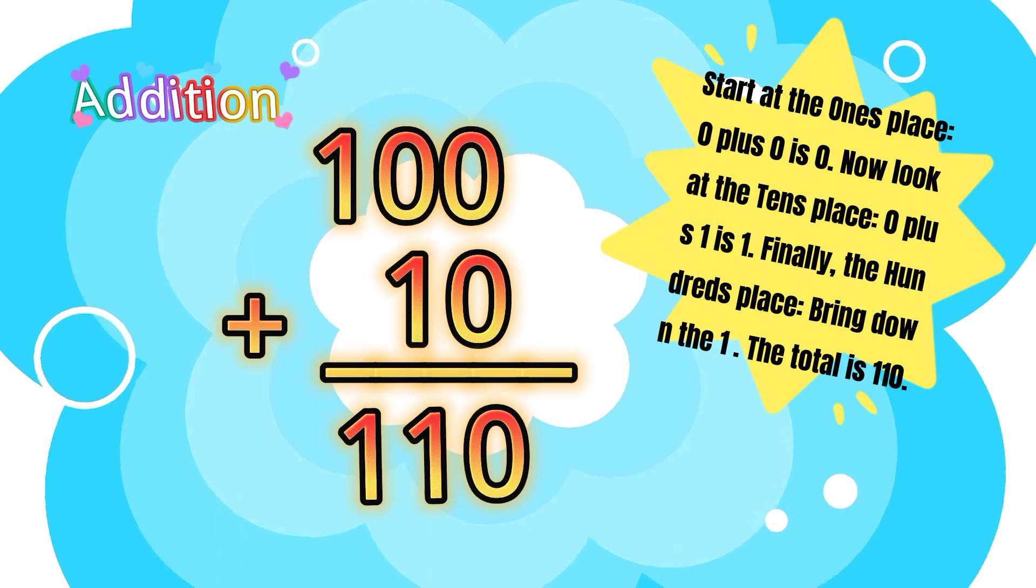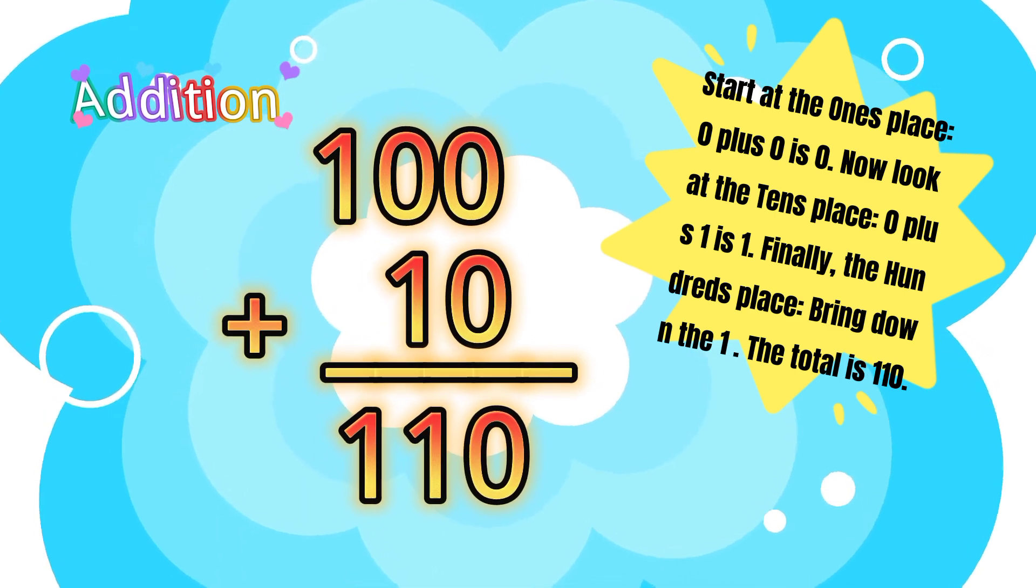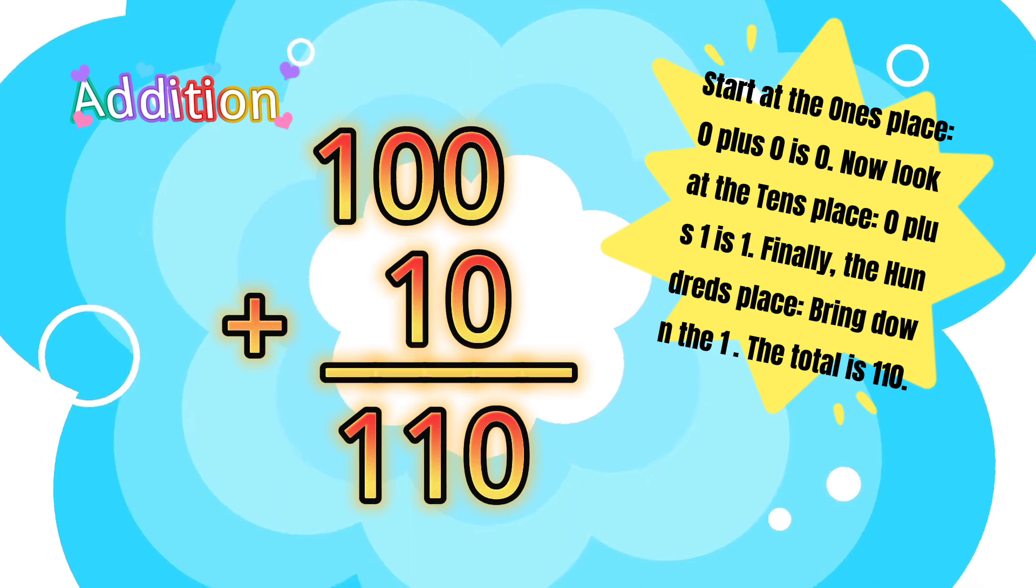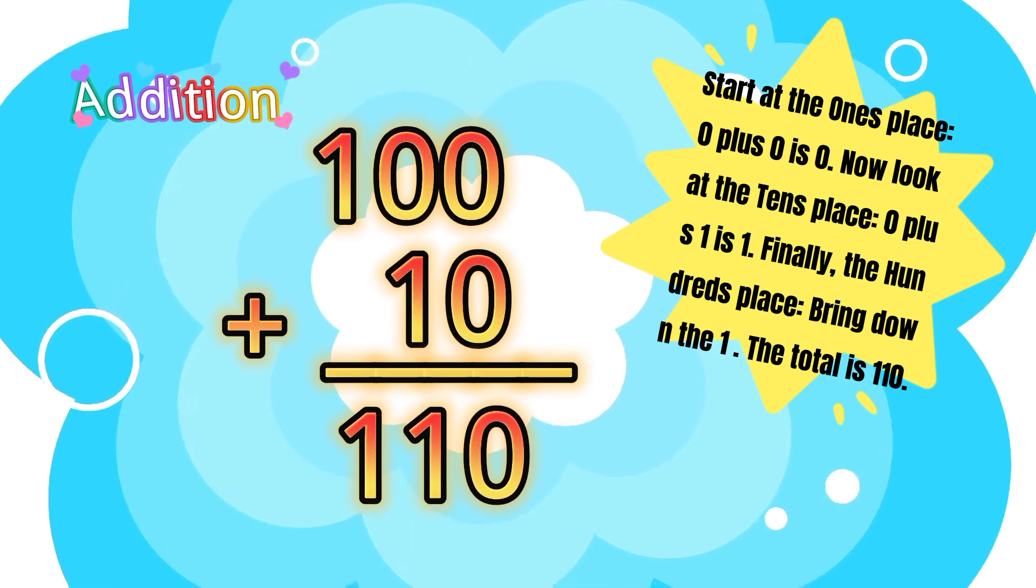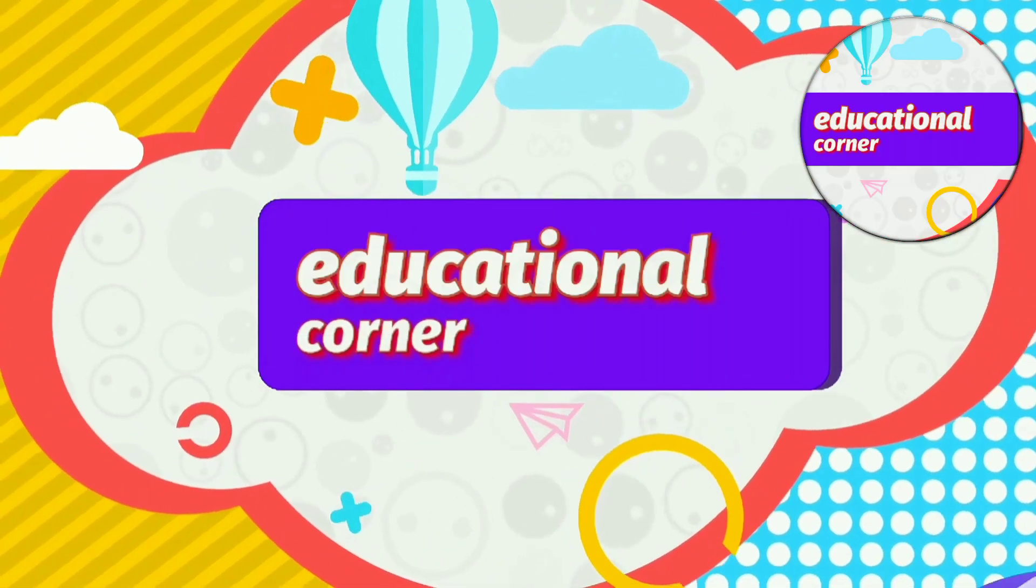Let's learn addition. 100 plus ten. Start at the ones place. Zero plus zero equals zero. Now look at the tens place. Zero plus one is one. Finally, the hundreds place. Bring down the one. The total is one hundred ten. Thanks for watching. Hope you like the video. Bye.